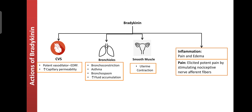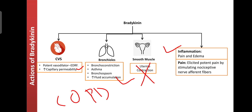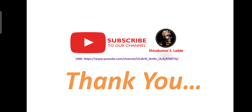In the bronchials or respiratory tract, bradykinin shows bronchoconstriction and is involved in causing asthma, COPD, bronchospasms, and fluid accumulation in the lungs by enhancing capillary permeability. In smooth muscle it causes contraction, especially uterine muscle contractions. Other effects include participating in inflammation by causing fluid accumulation at the injury site, producing pain and edema, and eliciting pain by stimulating nociceptive nerve fibers.